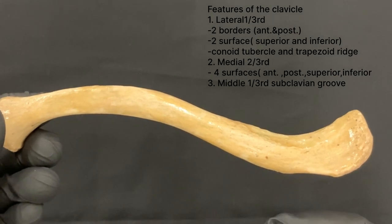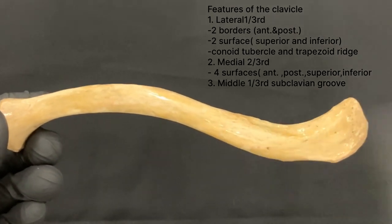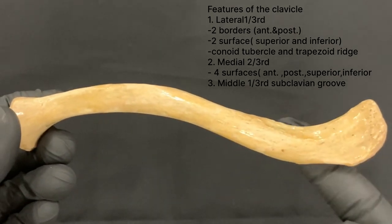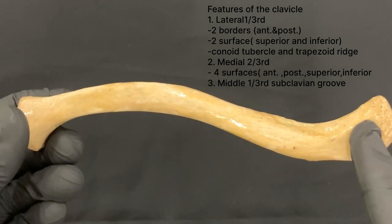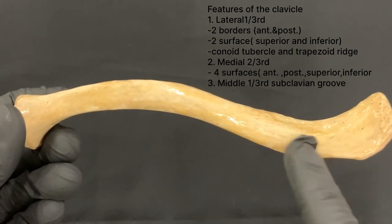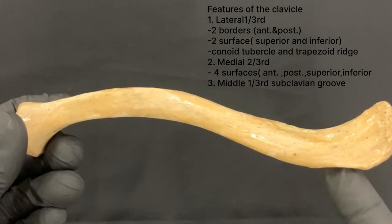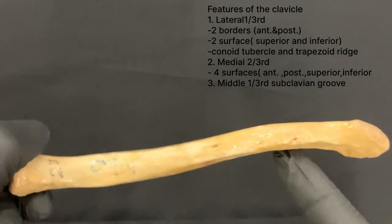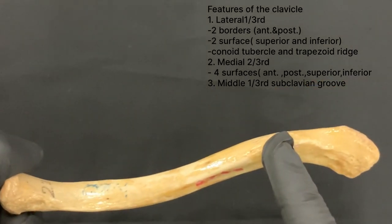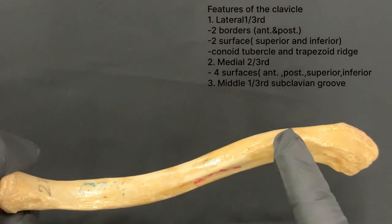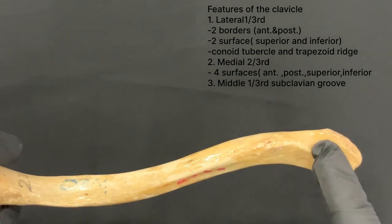This part of the bone has got two surfaces: a superior surface and an inferior surface. The superior surface is subcutaneous. The inferior surface has a rough oval impression at the medial end, and an elevation called the conoid tubercle, and a ridge which extends backwards called the trapezoid ridge.